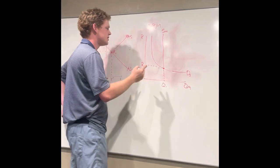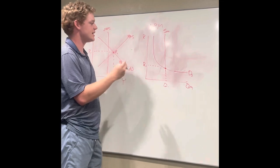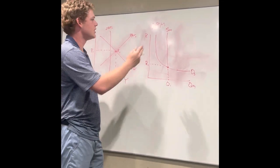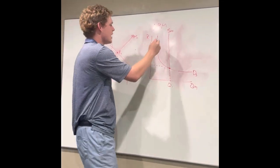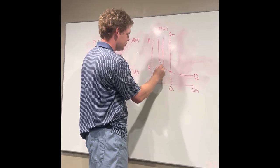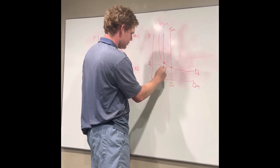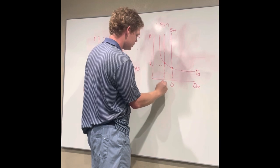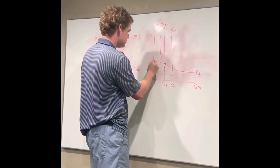And then if there was to be contractionary policy, such as a raising of the discount rate, which would bring the monetary supply back, it would now be over here, and you would have a new equilibrium, which would give you a Q2 right here and an R2 right here.